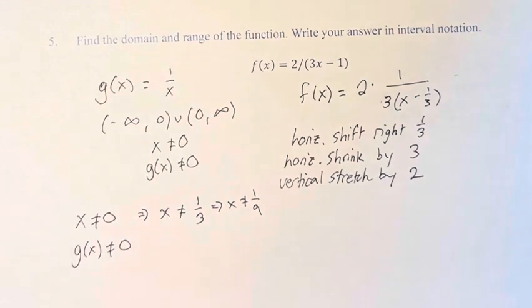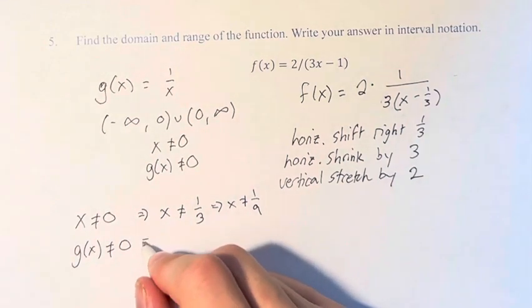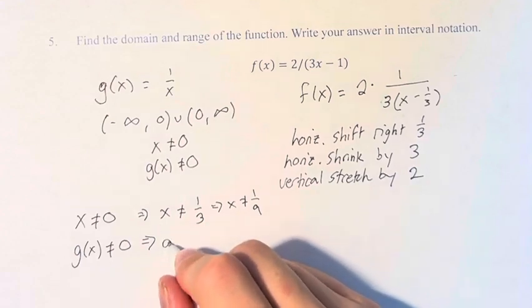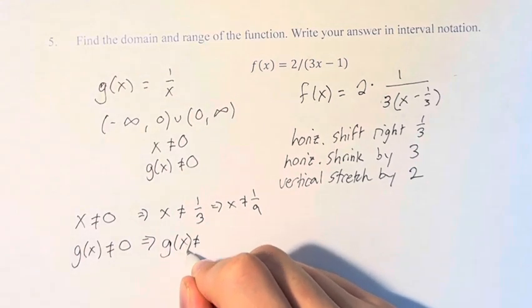Then we have a vertical stretch by a factor of 2, which means that g(x) is not equal to 2 times 0, which is still g(x) is not equal to 0.